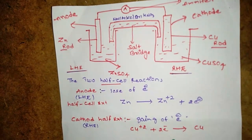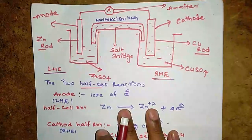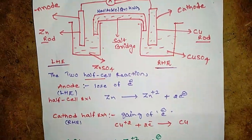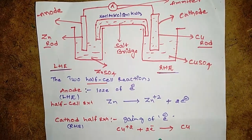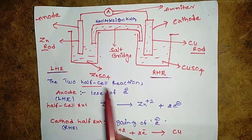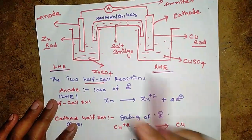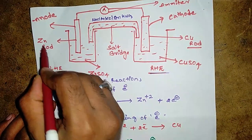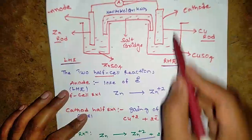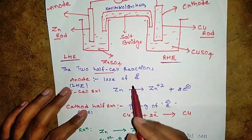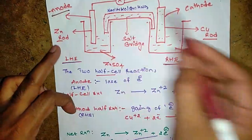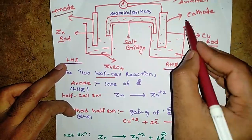Now look here at the galvanic cell diagram. The zinc rod is placed into the zinc sulfate solution, and the copper rod is placed into the copper sulfate solution. The zinc rod is the anode and the copper rod is the cathode.